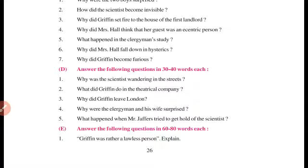Why did Griffin become furious? Griffin ko gussa kyun aaya tha? Griffin ko gussa isliye aaya tha ki woh chahte the ki unke room mein koi bhi disturbance na ho, koi bhi unhe disturb na kare. Par jo Mrs. Hall thi, woh unke room ko investigate karne ke liye aayi thi. Isliye jo scientist the, woh short-tempered aadmi the — unko kaafi jaldi gussa aa jaata tha — toh unko kaafi gussa aa gaya.